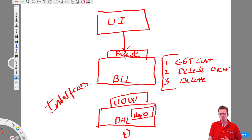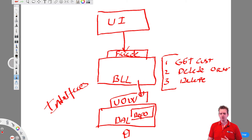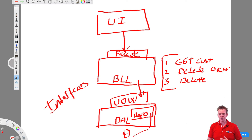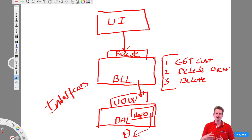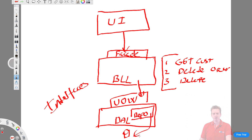You guys kind of know how we'll use this: the facade will be the only access point for the UI, the unit of work will be the only access point for the business logic layer to the data access layer, and the repo will talk to the database and get data from it. See you in the next lesson where we start doing it.